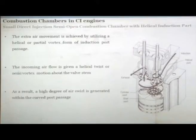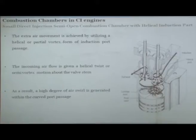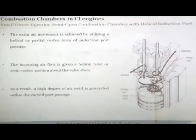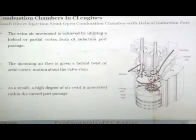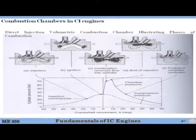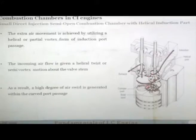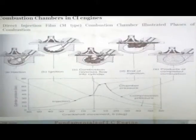A small direct injection semi-open chamber uses a helical induction port. You can see the helical port — the cross-sectional area is reduced and then there is a helical shape leading to the valve. This accelerates the flow and gives it a helical twist. The incoming air flow is given a helical twist by semi-vortex motion about the valve stem. As a result, a high degree of swirl is generated within the curved passage port.